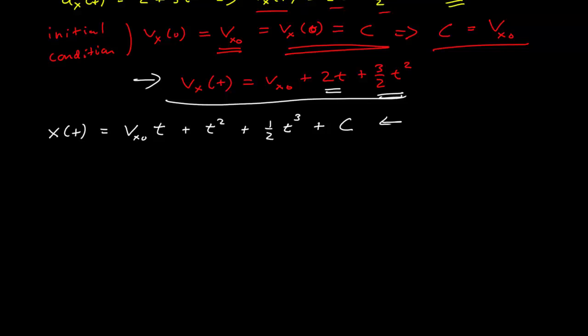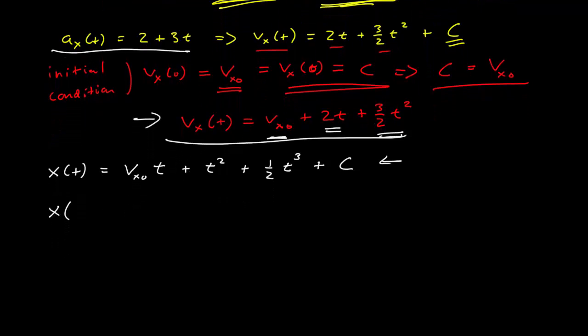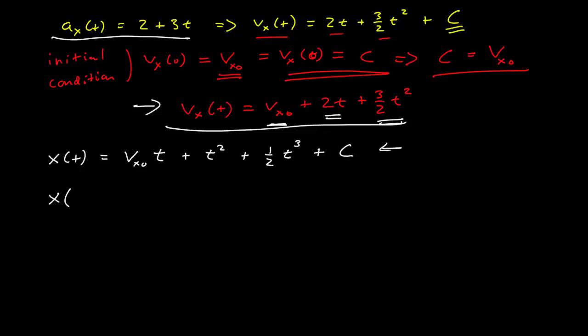Again, this is not an arbitrary constant, we can find out what it is given the initial condition of the system. In a problem, you may be given this number. Some object has this acceleration, and at t is equal to 0, it's at a location x equals 5, and it has a speed of 7 meters per second. So the problem's giving you the initial speed, your initial conditions, the initial speed and the initial position.